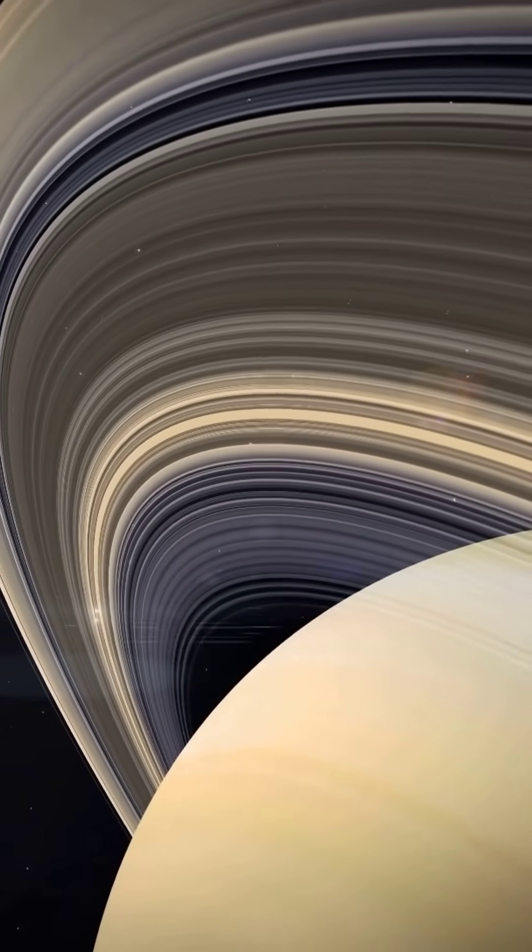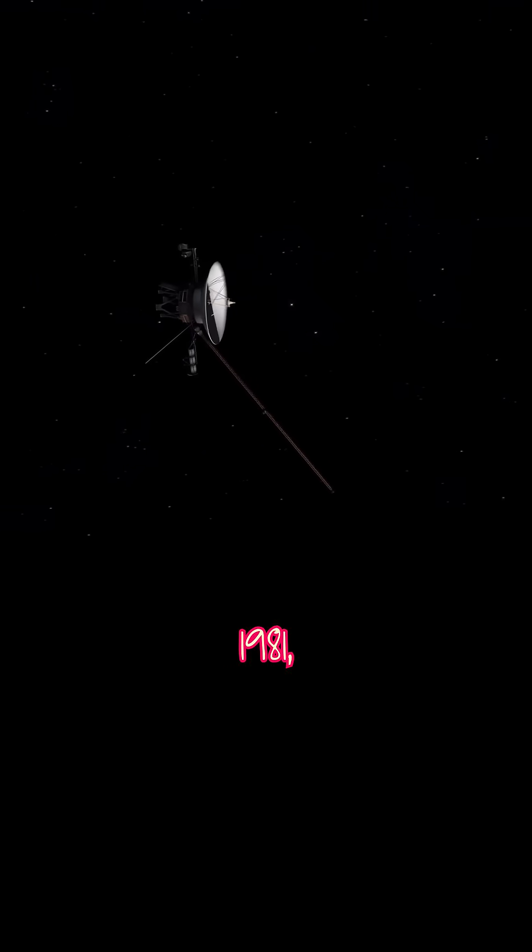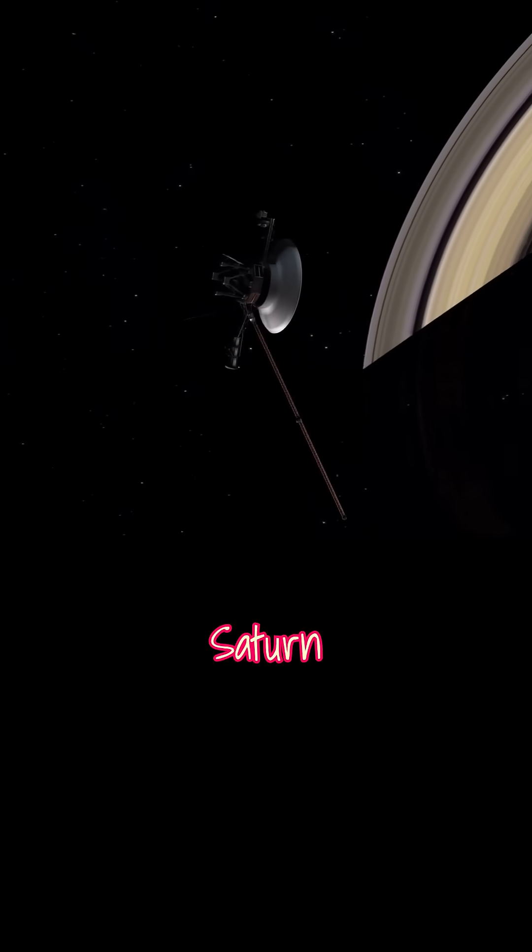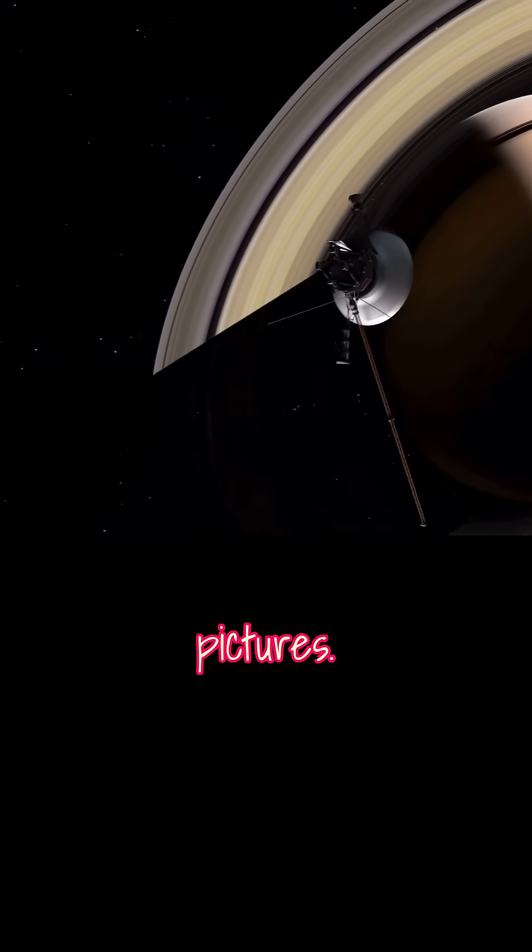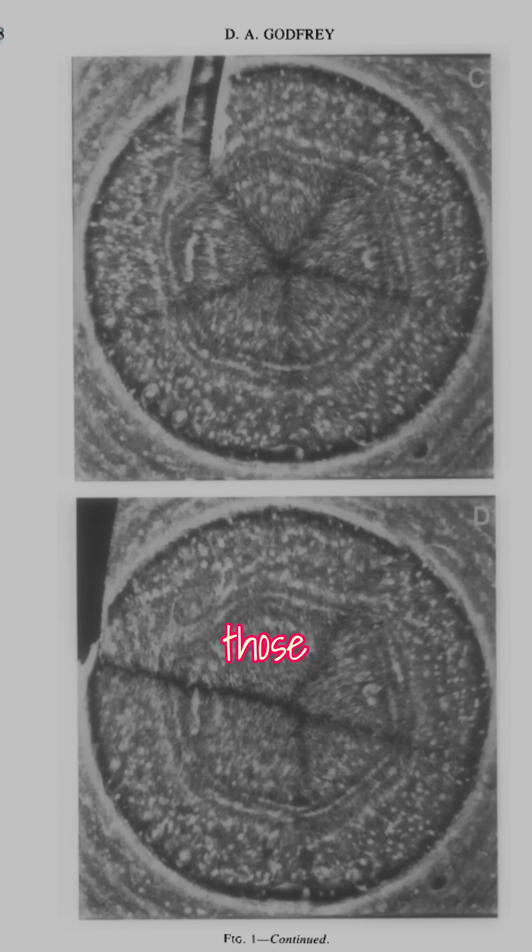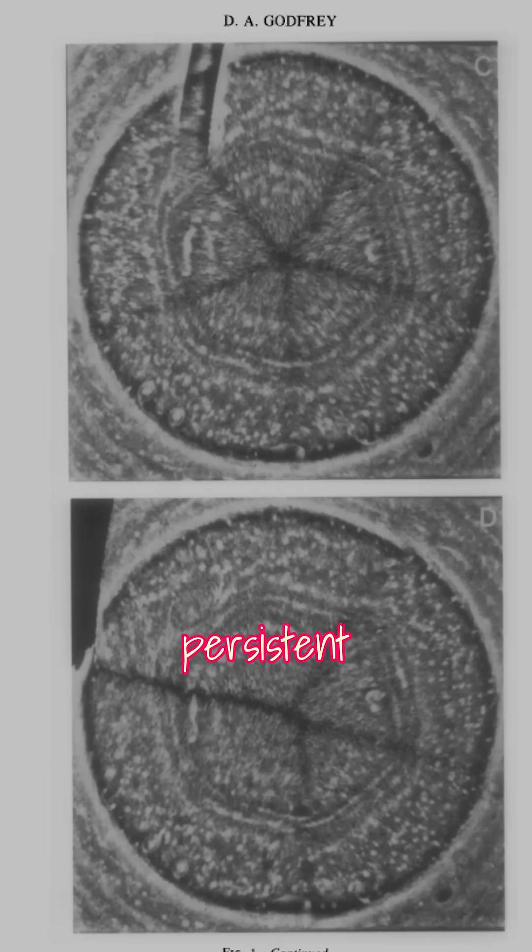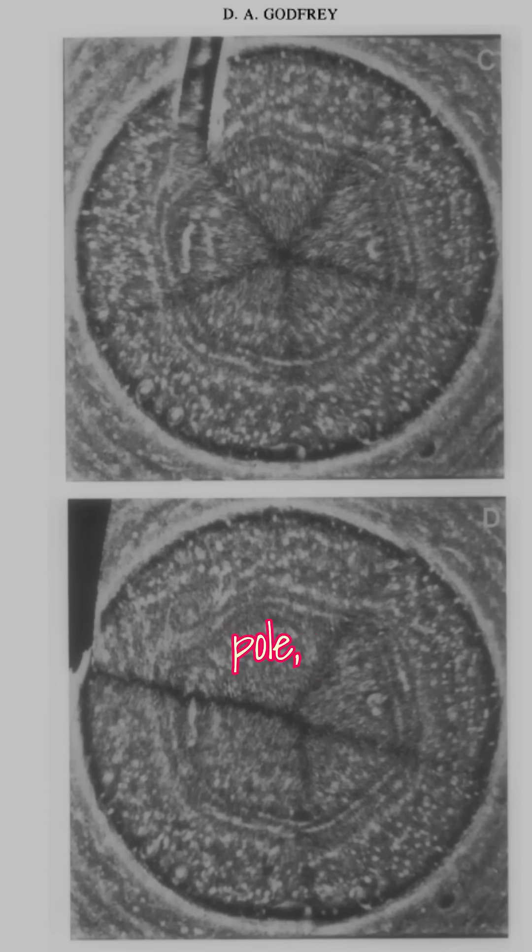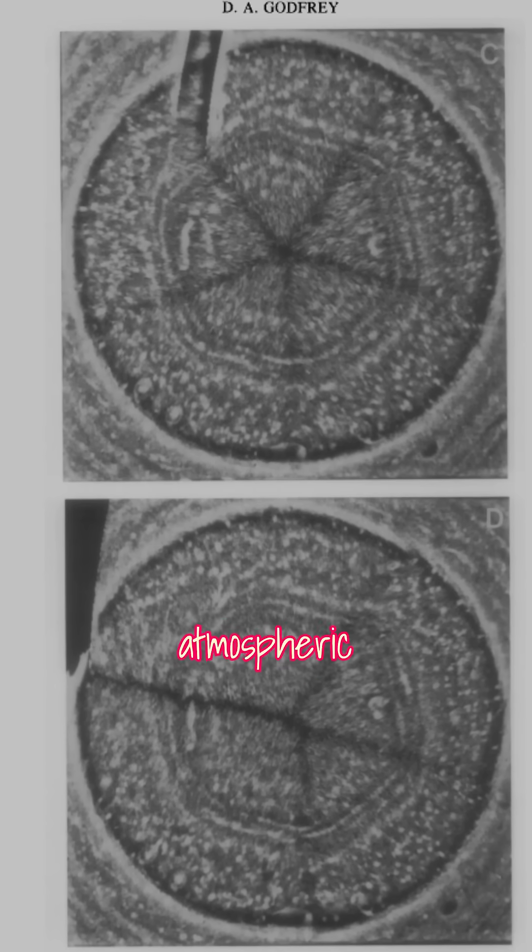In 1981, the Voyager 2 spacecraft flew by Saturn and took close-up pictures. When David Godfrey studied those pictures, he made a remarkable discovery, a persistent hexagonal pattern circling the pole made of rotating bands of atmospheric gas.